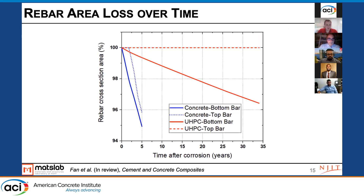Continuing on with these results, looking at rebar cross-section loss — in other words, if you start at 100%, what would occur over time in this representative example — the reinforcement area is decreasing far more rapidly in a reinforced concrete environment as compared to a UHPC environment.